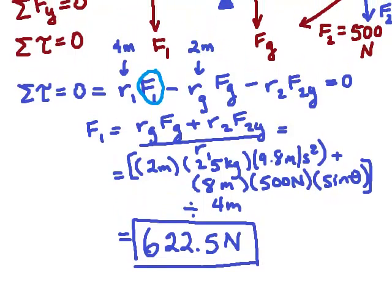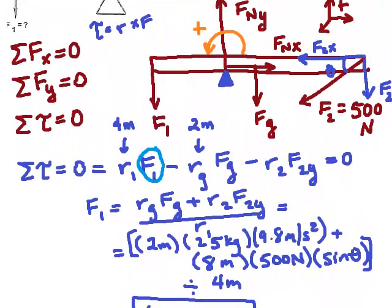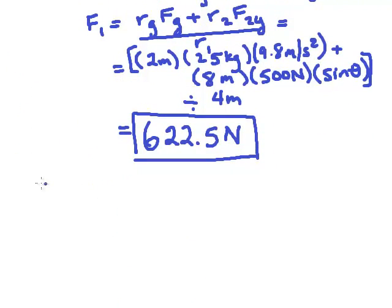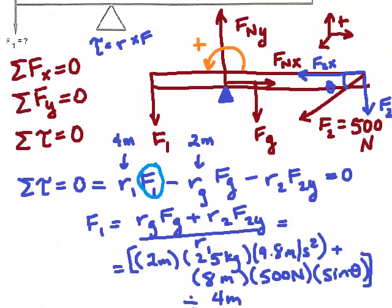For the second part of the problem, we have to look at what is this component FnY. In order to find FnY, we're actually going to use sigma F in the y direction equals zero. So what we'll come up with is sigma F y equals zero. There's no acceleration in the vertical direction.